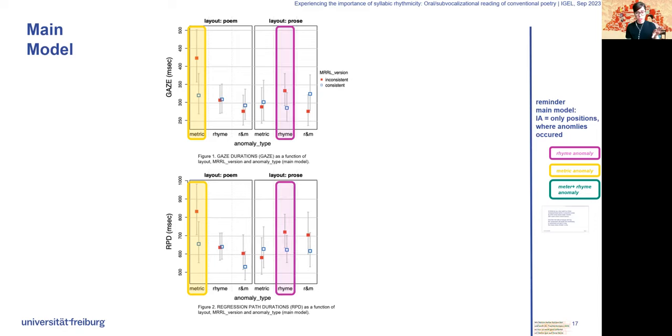In prose layout, the gaze durations and the regression path durations revealed longer reaction times for the rhyme anomalies, which suggests that readers expected rhymes due to the rhythmic sound gestalt, also in the prose version. The rhyme and meter anomaly resulted in shorter gaze durations but longer regression path durations in the prose layout. So seemingly this one triggered a very early regressive saccade during first pass reading.